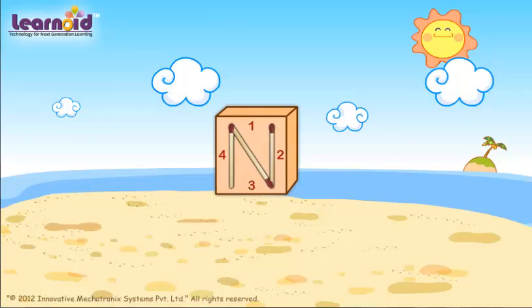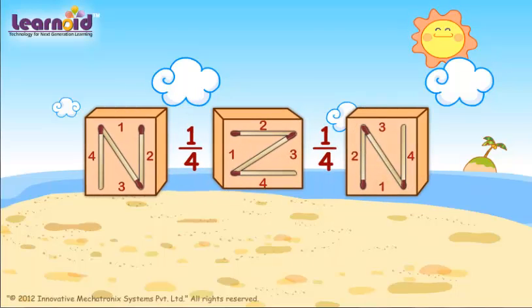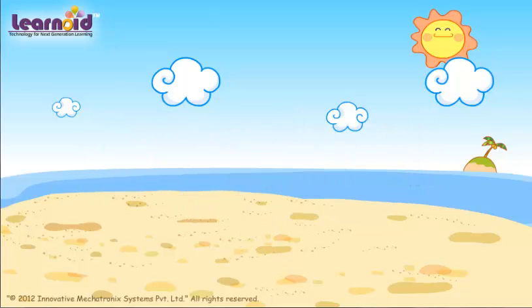Rotating one-fourth two times turns the shape halfway. Rotating a half turn gives the same alphabet N. Any shape can be rotated one-fourth and halfway.